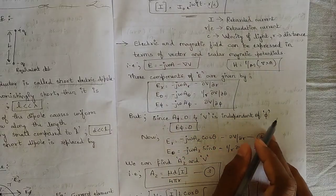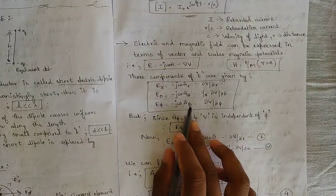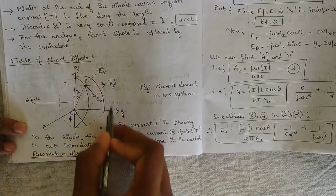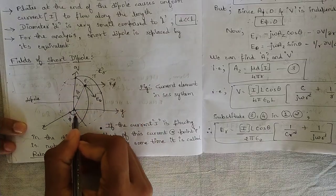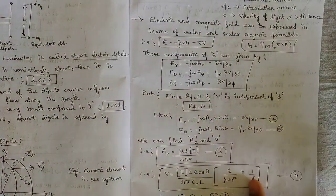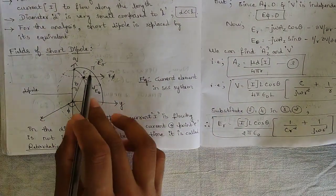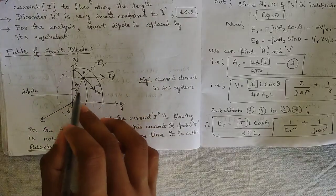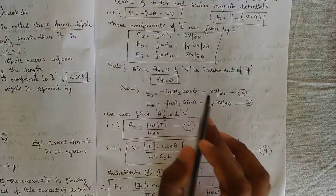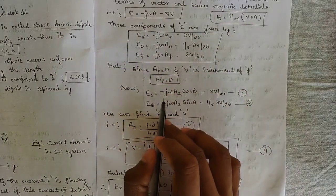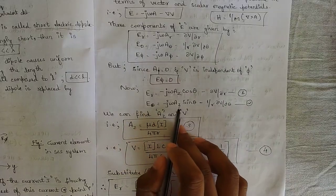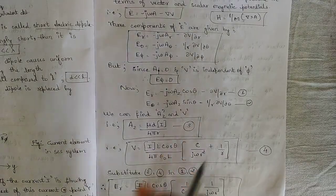Since Aφ = 0 and V is independent of φ, the Eφ component equals zero and drops out entirely. Therefore Er simplifies to: Er = −jωAz cosθ − ∂V/∂r, and Eθ simplifies to: Eθ = −jωAz sinθ − (1/r)∂V/∂θ.